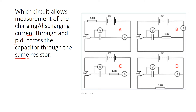Looking at circuit A — let's go through charging first. We can charge through this resistor here, measure the current with this ammeter, and measure the voltage with this voltmeter. But when we discharge, moving the switch to the bottom position, we are no longer discharging through a resistor. So our criterion of using the same resistor is not met — it's not circuit A.